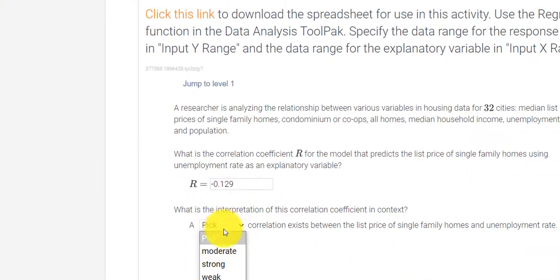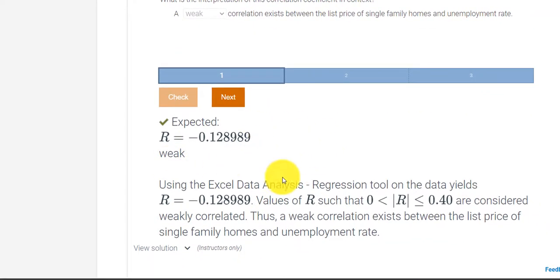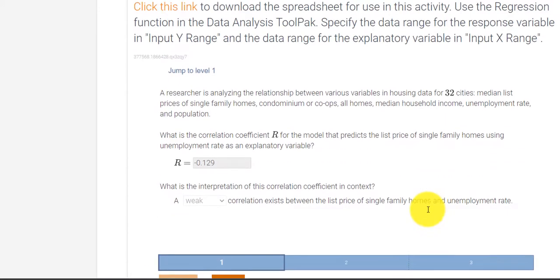So it's a weak correlation. Let's check our answer. And we get it correct. It's weak because it's between zero and 0.4.